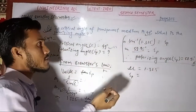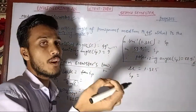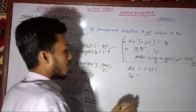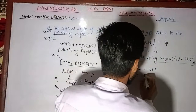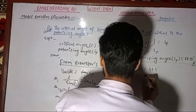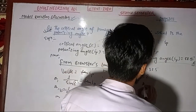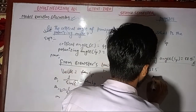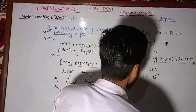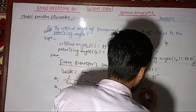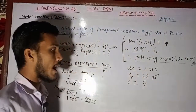So to write this: the polarizing angle IP is 52.95 degrees and the critical angle C is equal to 49 degrees.